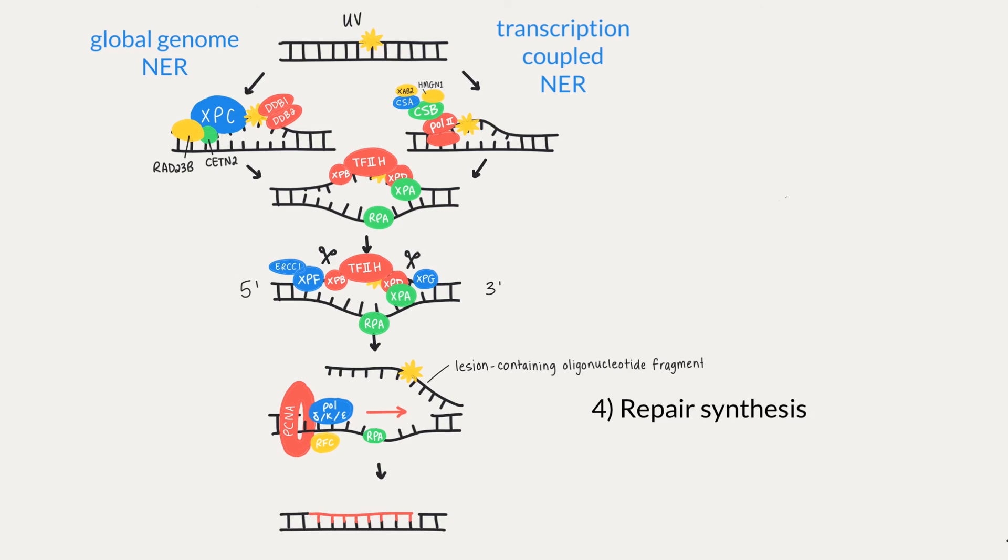Polymerase delta and kappa, however, are the main nucleotide excision polymerases in non-replicating cells where there's a lower concentration of free-floating nucleotides. These need PCNA and RFC.